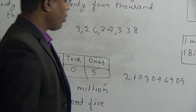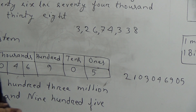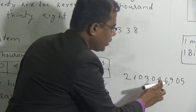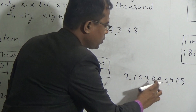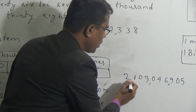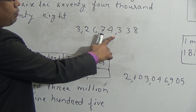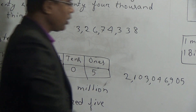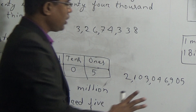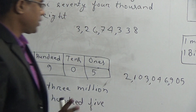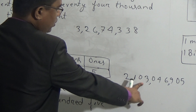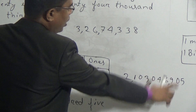Now we will place commas. In the international system, after every three digits we give a comma. In the national system, the first comma comes after three digits, but then after every two digits. In the international method, every comma comes after every three digits. So it reads: 2,103,046,905 — two billion, one hundred three million, forty-six thousand, nine hundred five.